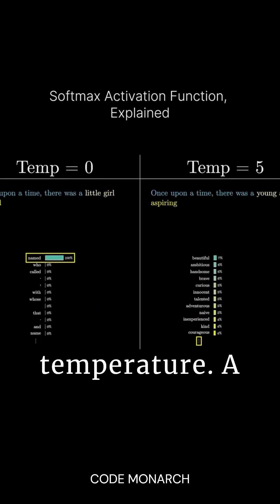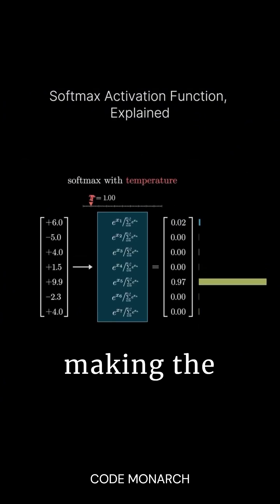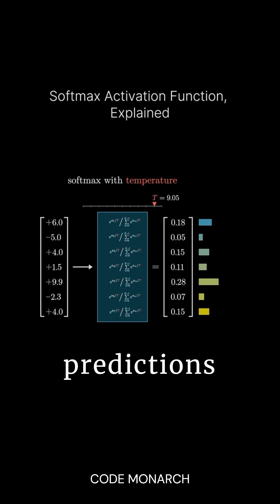Now, let's talk about temperature. A higher temperature spreads the probabilities more evenly, making the choices less decisive. In contrast, a lower temperature amplifies the influence of the largest input, making predictions more certain. Setting the temperature to zero means all the weight goes to the maximum input.